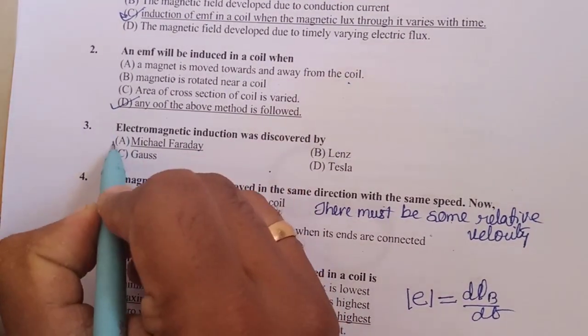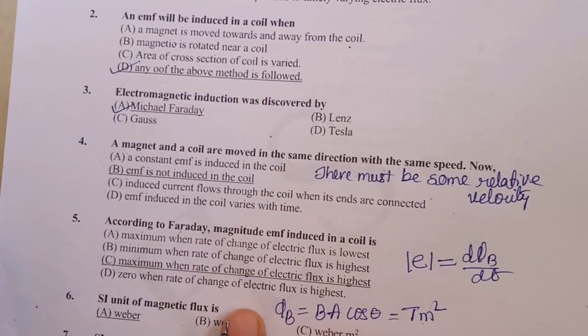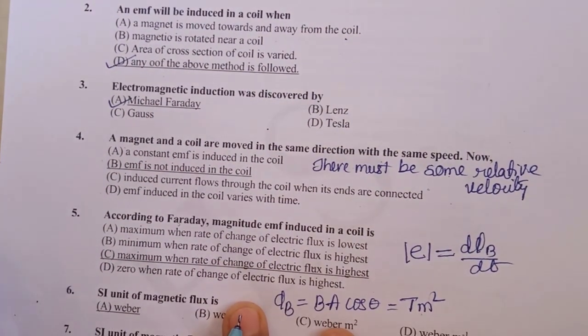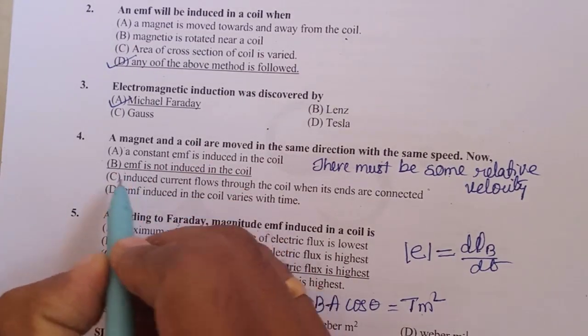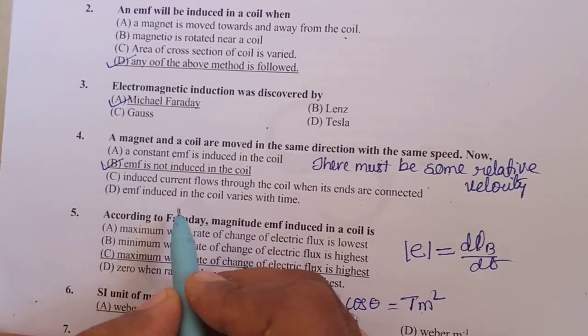Electromagnetic induction was discovered by Michael Faraday. A magnet and a coil are moved in the same direction with the same speed. Now there is no EMF induced because for the EMF to induce, there must be some relative velocity.